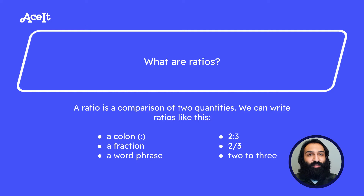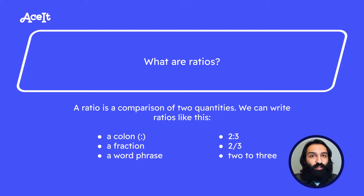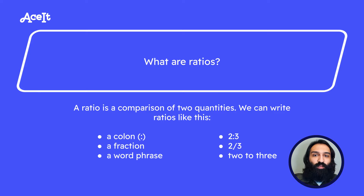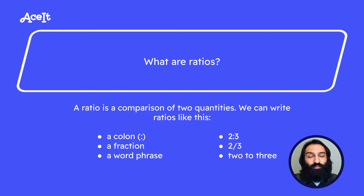A ratio is a comparison of two quantities. It can be written in a few different ways: with a colon, as a fraction, or as a word phrase. For example, the ratio of 2 to 3 can be written as 2:3, 2/3, or 2 to 3.